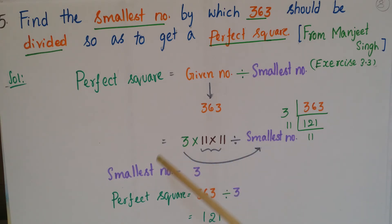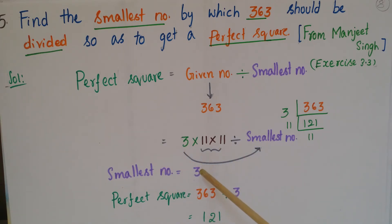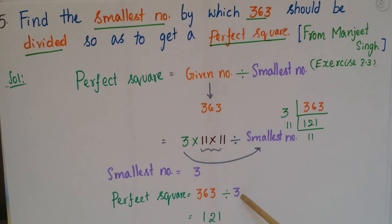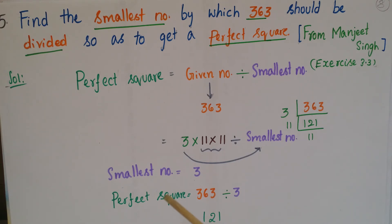So 3 is the smallest number. The perfect square equals the given number 363 divided by the smallest number 3, which gives 121. We know that 121 can be written as 11 squared, so that is a perfect square.